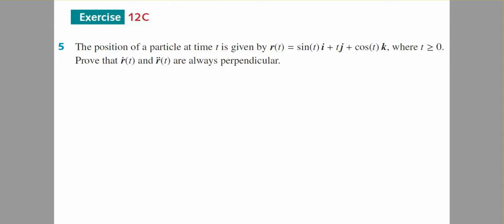This is for year 12 specialist. It comes out of exercise 12C, question number 5. I have this position vector with an i component, a j component, and a k component. I need to prove that the first derivative dot the second derivative is 0 to show that they're perpendicular.